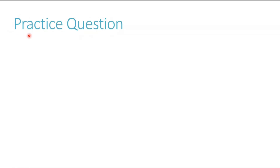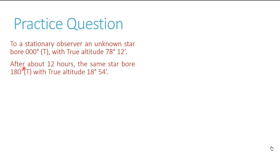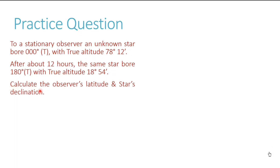Let's now practice a numerical question based on the concept of circumpolar bodies. We have the basic understanding of circumpolar bodies now, so let's go into this question. To a stationary observer, an unknown star bore 000 true with a true altitude of 78 degrees 12 minutes. After about 12 hours, the same star bore 180 true with a true altitude of 18 degrees 54 minutes. We have to calculate the observer's latitude and the star's declination — a straightforward and simple looking question.